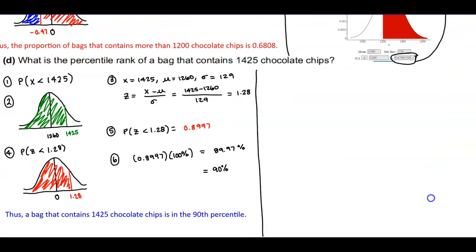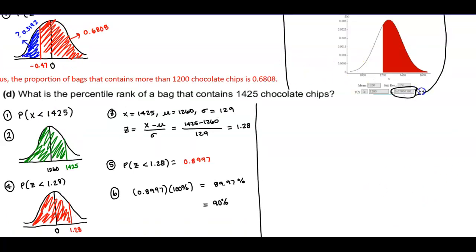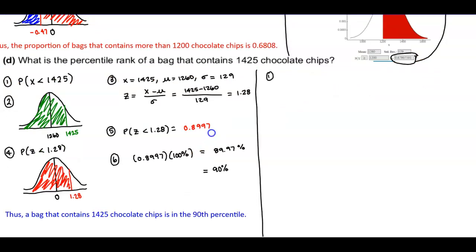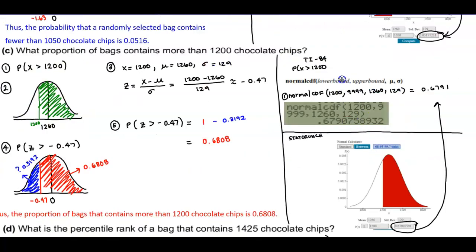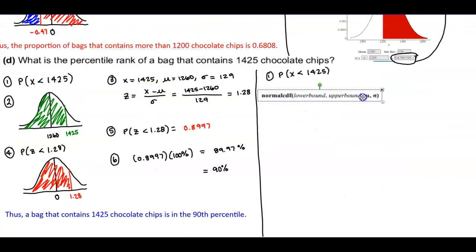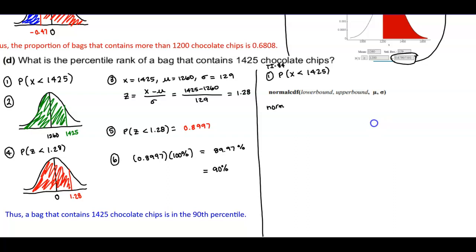Notice how the results differ when using Z-scores versus the original numbers. Next, we want to find the percentile rank of a bag that contains 1,425 chocolate chips, so we want P(X < 1,425). Using normal CDF on the TI-84: the lower bound is negative 9999, the upper bound is 1,425, the mean is 1,260, and the standard deviation is 129.